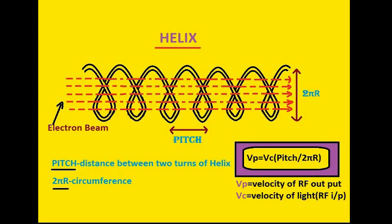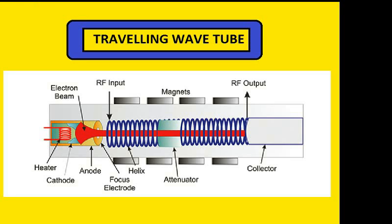The helix is a loosely wound thin conducting helical wire which acts as a slow wave structure. In this helical structure the distance between two windings is considered as pitch. When we see this spring from the input or output side we find a circle, so we consider the circumference of the circle. Here r is the radius of the helix and this radius is constant all over the helix throughout the glass tube.